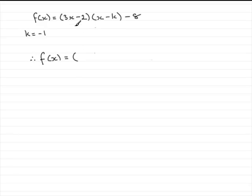And if we do that, we've got for the first bracket, well, that's going to stay the same, 3x minus 2. And for the second bracket, we've got x minus the minus 1. So in other words, x plus 1. And then we've got minus 8 on the end.